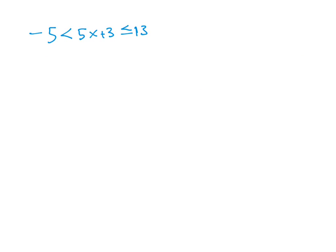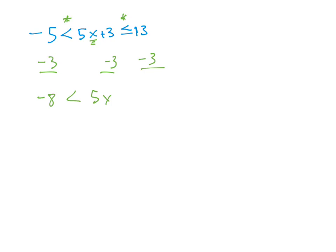The third question, number 14, is a compound inequality — when we have two inequality symbols. To solve for x, subtract 3 from each section of the inequality. We get negative 8 less than 5x less than or equal to 10. Then divide by 5 in each position, giving negative 8 fifths less than x less than or equal to 2.